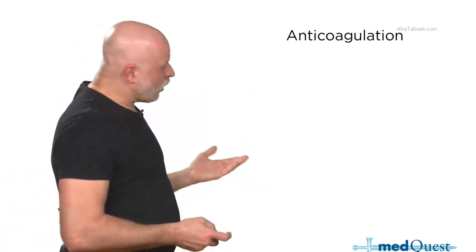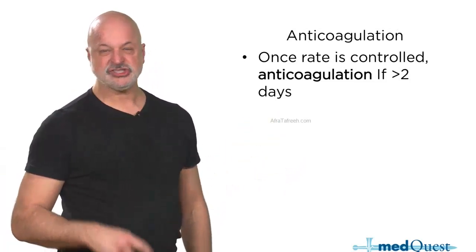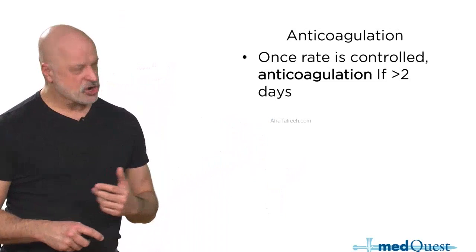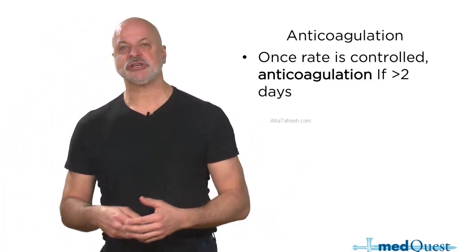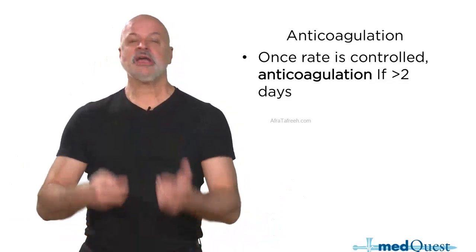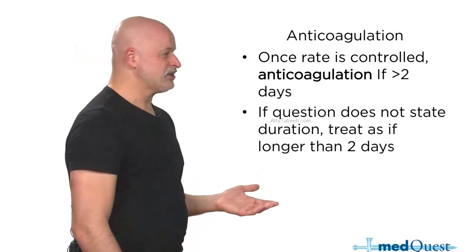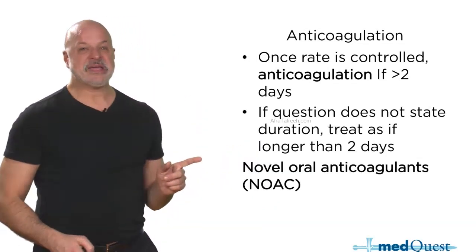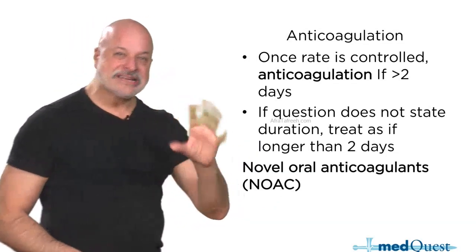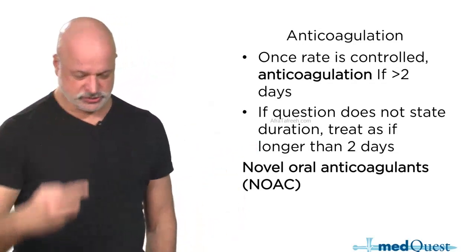Unstable: synchronized cardioversion. Stable: rate control. If they're already rate controlled, and if the AFib is chronic — and chronic for AFib means more than two days — you start to develop a risk of having a clot in the heart, and it's time to look at anticoagulation. If the duration is not stated, assume it's longer than two days.